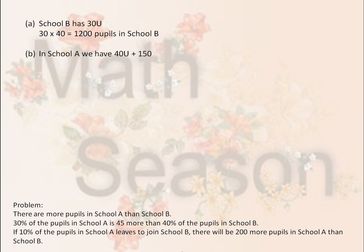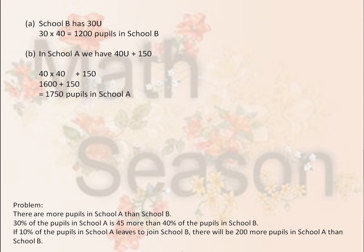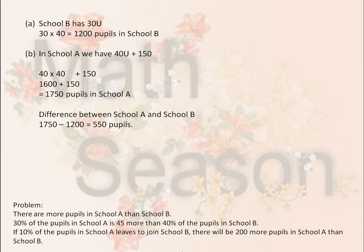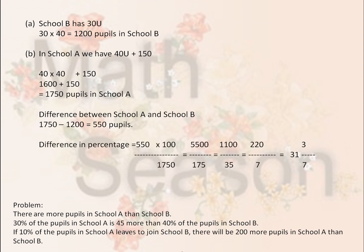In School A, we have 40U plus 150. When you solve that, you get 1600 plus 150, or 1750 pupils in School A. The difference between School A and School B is 550 pupils: 1750 less 1200. The difference in percentage is 550 multiplied by 100 divided by 1750. As you simplify the equation, you get the answer 31 and 3/7. So the answer is 31 and 3/7, expressed as a fraction.